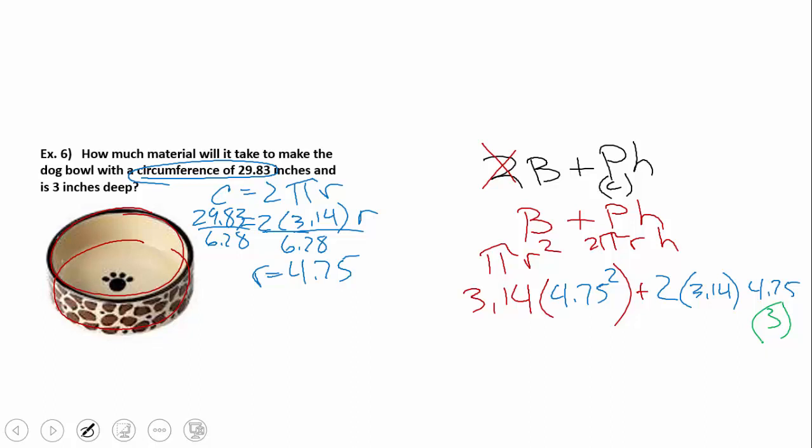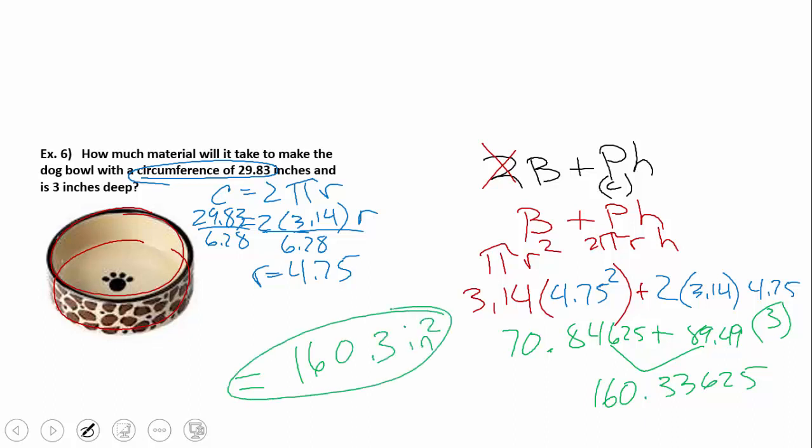3.14 times 4.75 squared is 70.84625. Plus, 2 times π times 4.75 times 3 is 89.49. Adding those two together, I get 160.33625. So we're going to say a final answer of 160.3 inches squared of material to make that nice little doggy bowl. I would probably use that bowl for water.